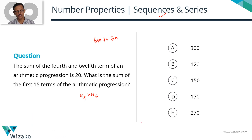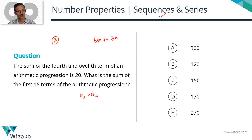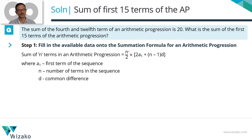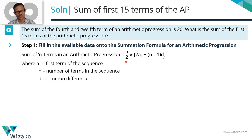Let's quickly write down the formula. We're going to solve this question taking two approaches. The first approach is the textbook approach. Let's write the textbook formula to compute the sum of the first n terms of an arithmetic progression. The sum of the first n terms is given by n divided by 2, times 2A1 plus n minus 1 times d. A1 is the first term, n is the number of terms in the sequence, and d is the common difference.